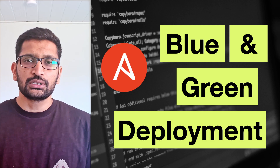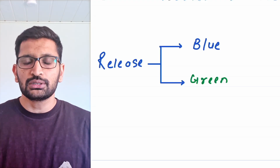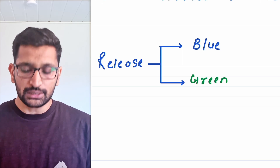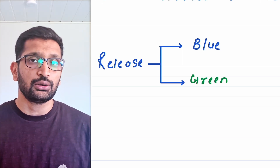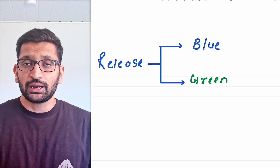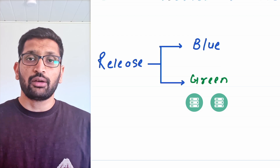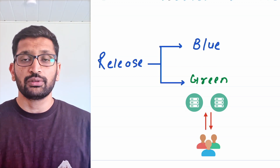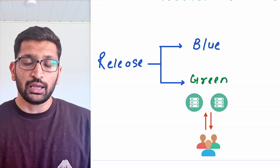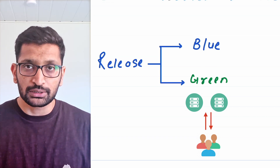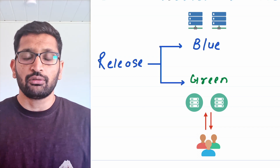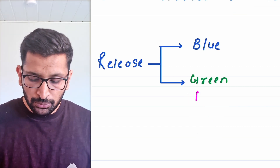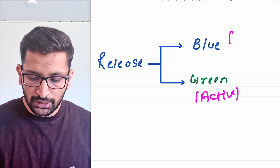You might be wondering what this blue and green category means. Whenever you have more than one server, it's difficult to remember all the IP addresses, so in Ansible we create categories. In our example, the green category contains two servers that are actively running in the production environment and actively serving requests from active customers — so applications are live and accessible by clients. The blue category is also a production environment but is passive, not actively serving client requests.